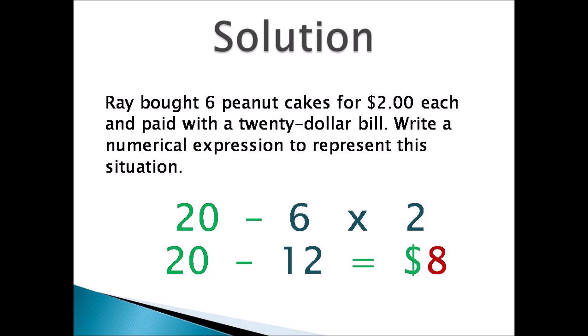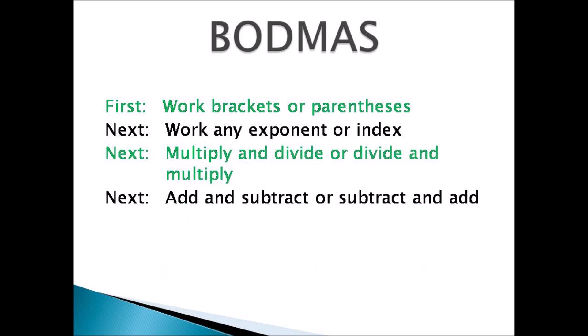So you have to multiply 6 times 2, which is 12. Then you do your subtraction. So 20 minus 6 times 2 equals 20 minus 12, and then you get 8. The answer would be $8. That's how you work it using BODMAS. Remember: first work brackets or parentheses, next work any exponent or index or root, next multiply and divide, and last add and subtract.